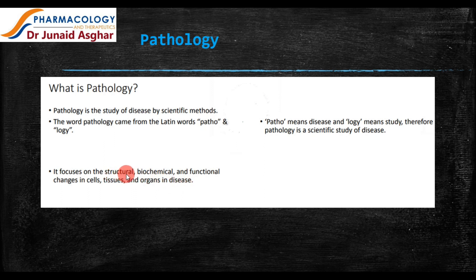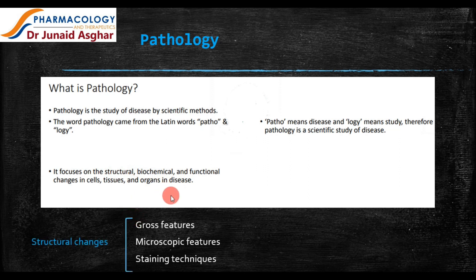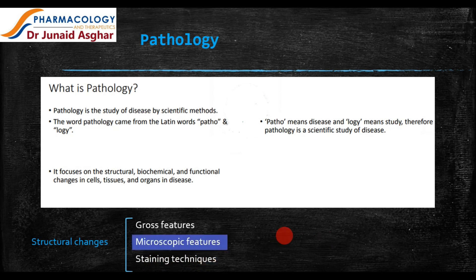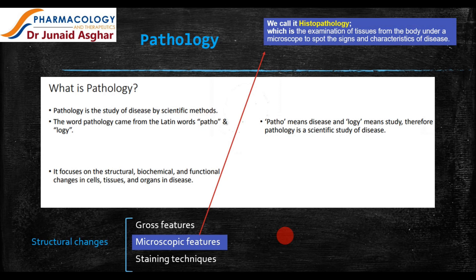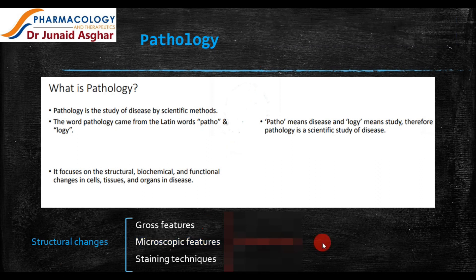Pathology involves structural changes observed by naked eye examination, referred to as gross or macroscopic examination, and also changes detected by the microscope, which may be further supported by numerous staining techniques. Histopathology is the branch of pathology which deals with the examination of tissues from the body under a microscope to spot the signs and characteristics of a disease. Pathology also involves quantitative determination of various biochemical constituents in serum, plasma, and other body fluids such as urine, CSF or cerebrospinal fluid, and semen.